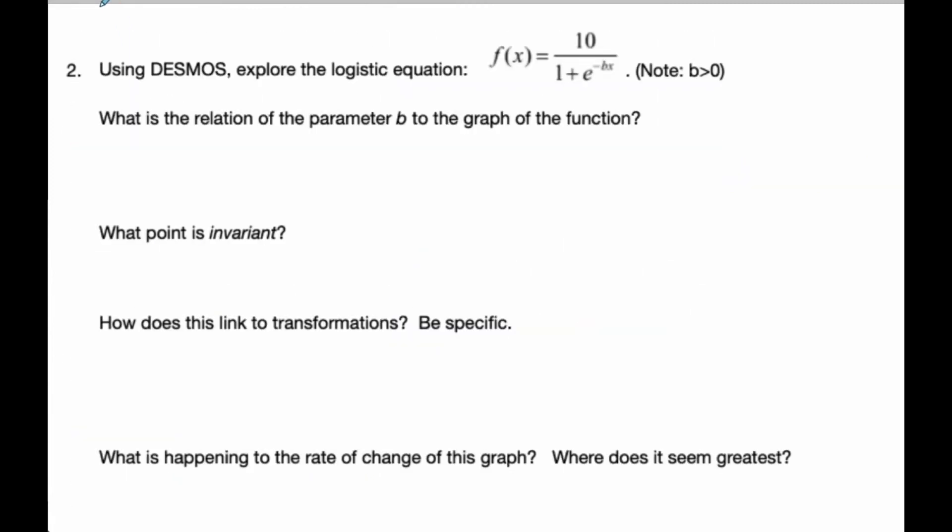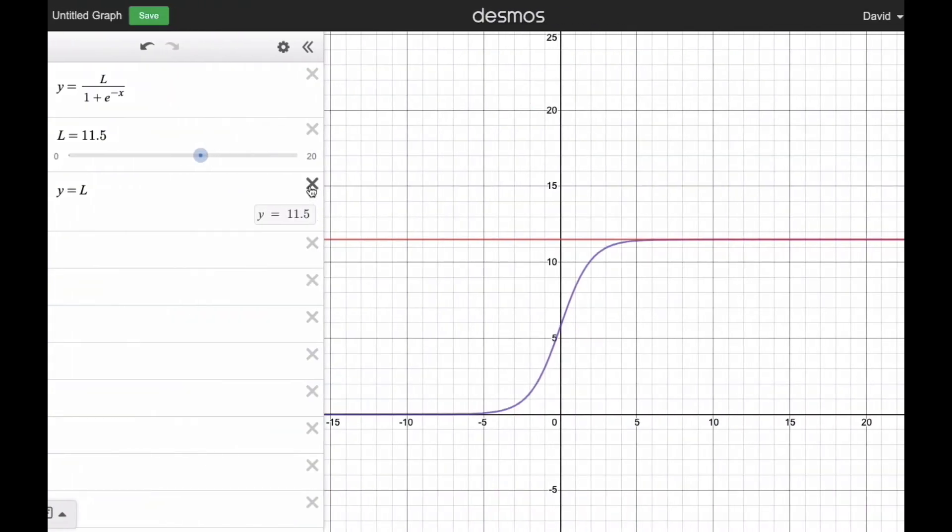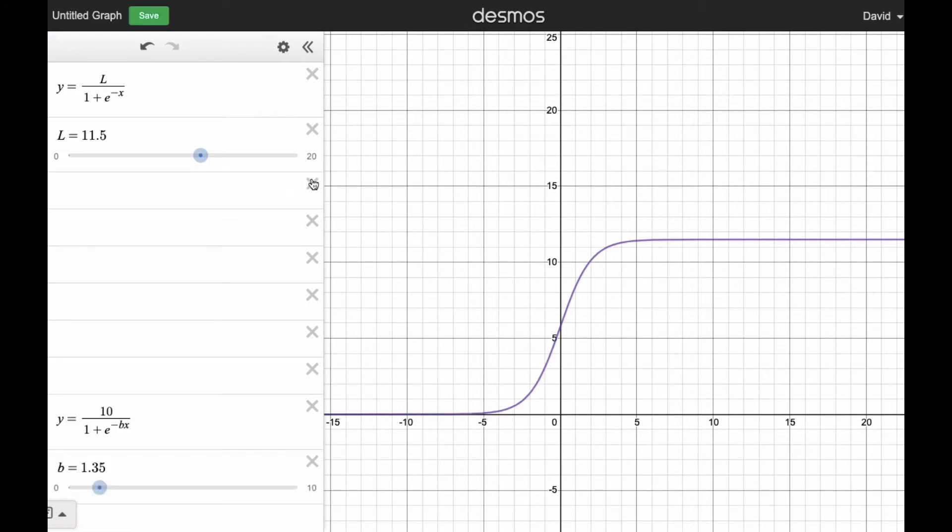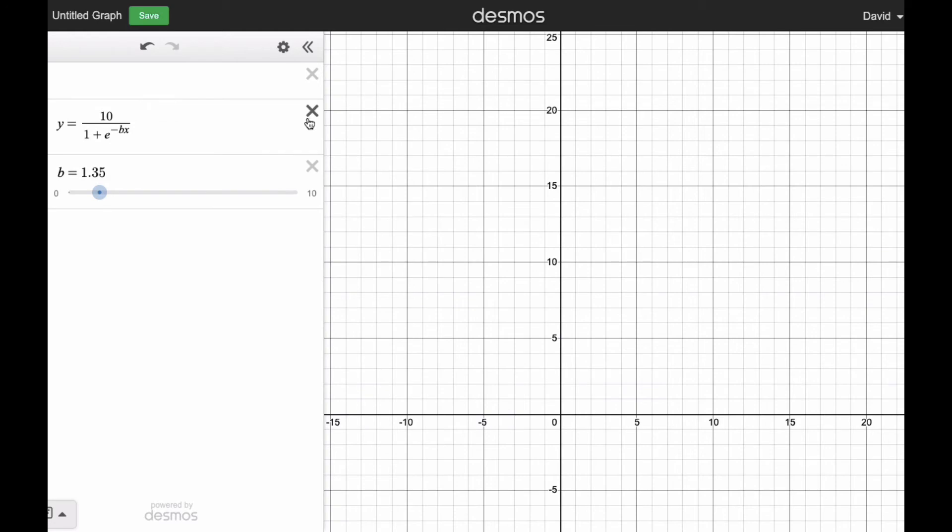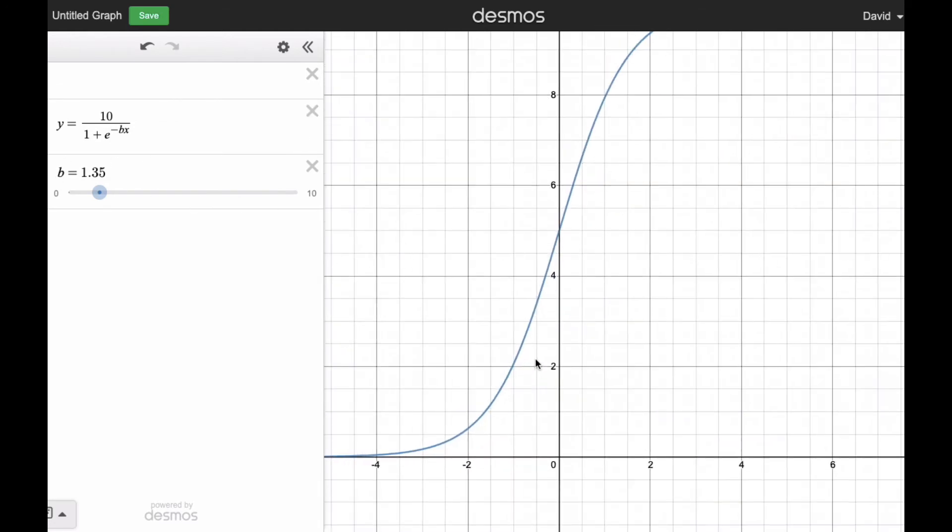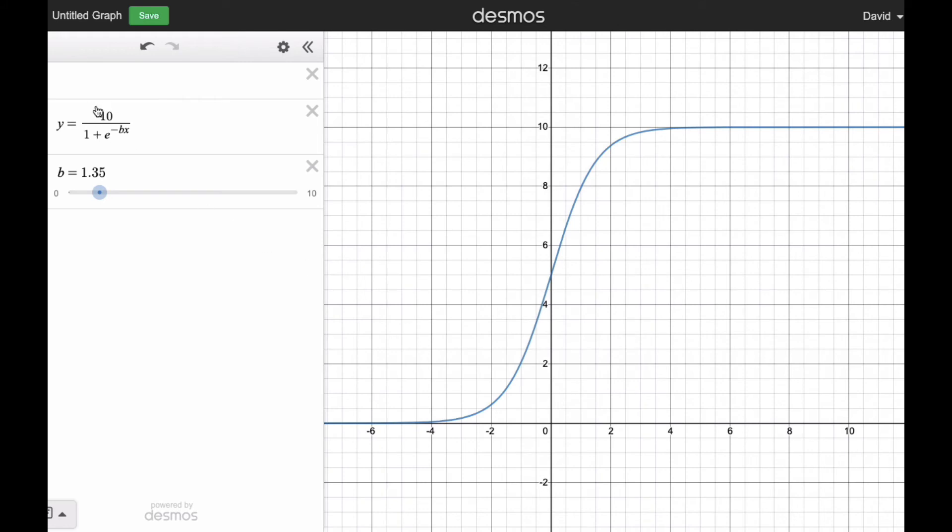If I look now at changing the scenario, I'm going to fix L at 10, and I'm going to look at this B value. It always has to be greater than zero. So if I go back to here, let me delete a bunch of these curves and see what I have to play with. I have this function here, and I know the carrying capacity is 10, and I want to see the effect of B.